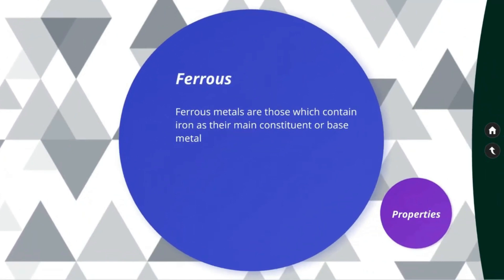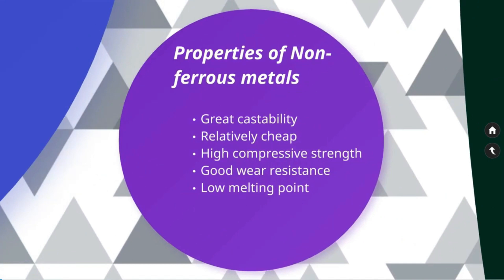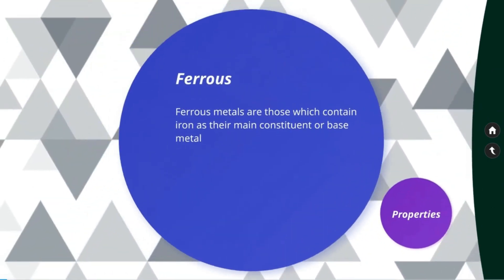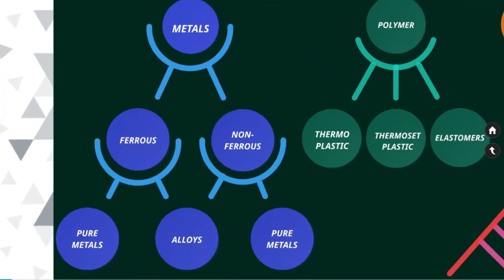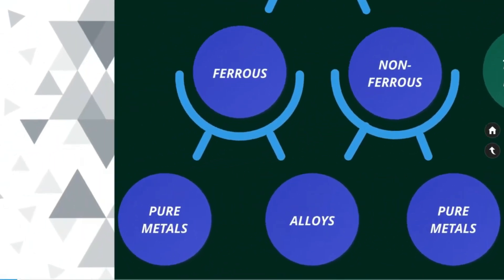Ferrous metals are those which contain iron as their main constituent or base metal. Ferrous metals have great castability, high compressive strength, good wear resistance, low melting point, and are also relatively cheap. Ferrous metals are again available in pure metal form or alloy form.